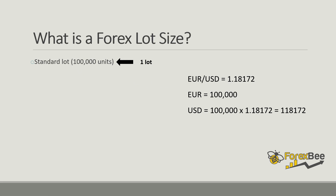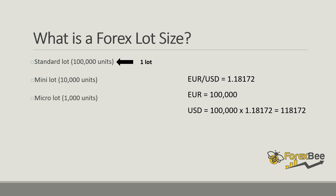There are other lots as well. Below the standard lot is the mini lot, which contains 10,000 units of the base currency in a currency pair. Below the mini lot is the micro lot, which contains 1,000 units of the base currency. Some brokers go as low as nano lots, which contain 100 units of the base currency of the currency pair.